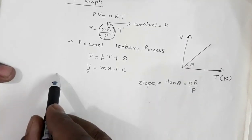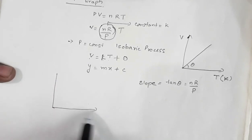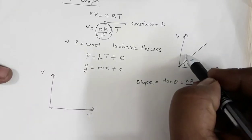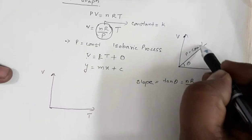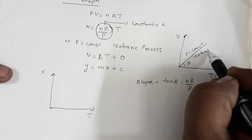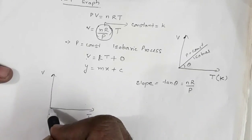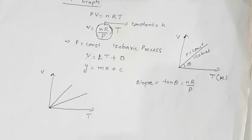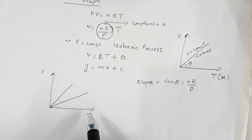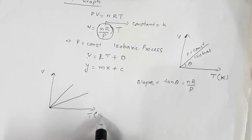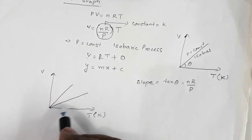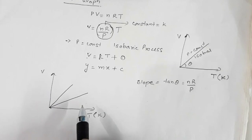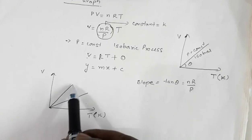Suppose we have a VT graph with two isobars. For each line, pressure is constant, so each line is an isobar. If you have a VT graph where T is in Kelvin and a straight line passes through the origin, that straight line represents an isobar — for that particular straight line, pressure is constant. When we have two different straight lines, the pressures are different for each line.